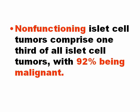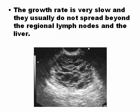Functional tumors produce hormones — insulin, glucagon, and gastrin — while non-functional tumors do not produce hormones. The growth rate of these tumors is very low and they usually do not spread beyond the regional lymph nodes and the liver.